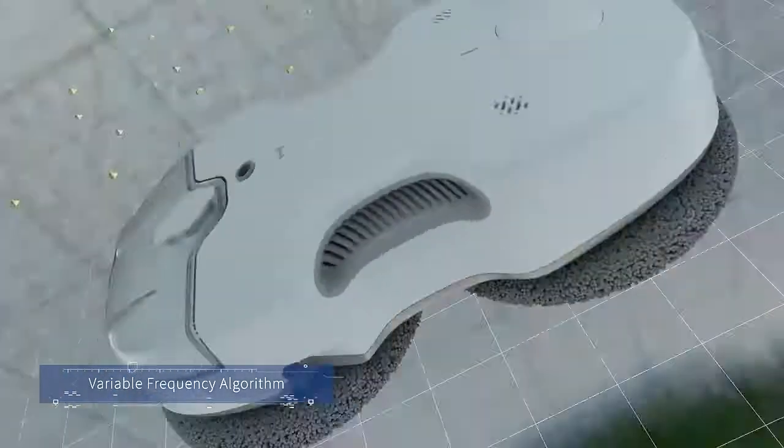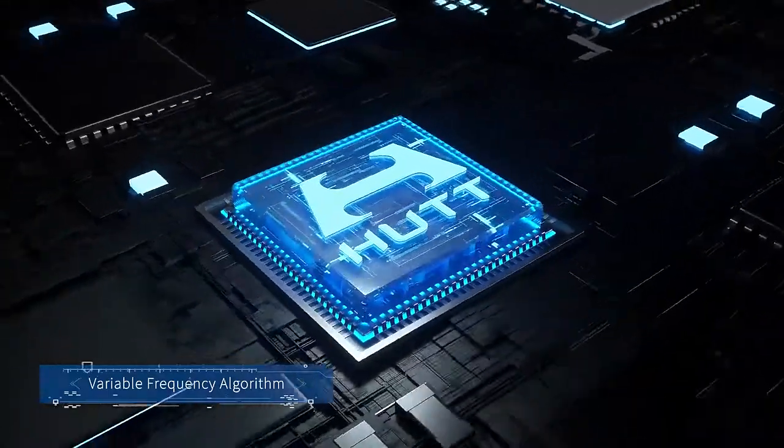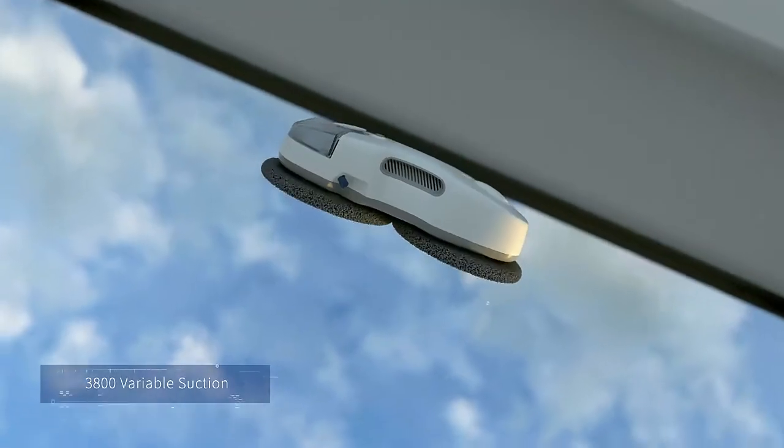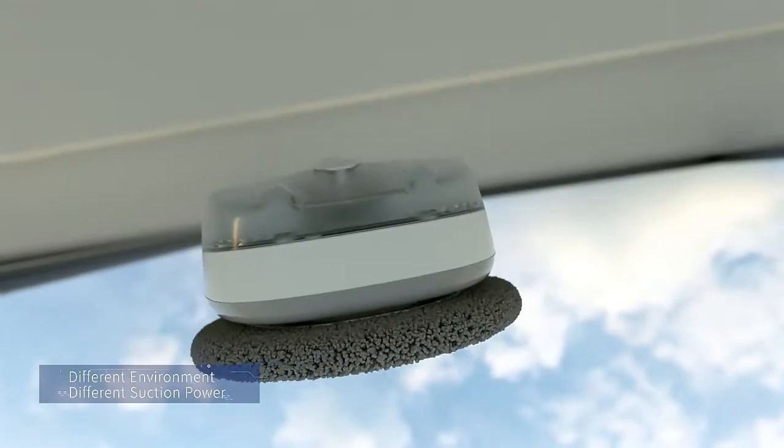HUD-C6, equipped with intelligent frequency conversion algorithm, automatically adjusts the suction according to the window environment. 3,800 pounds hurricane suction removes stubborn stains.